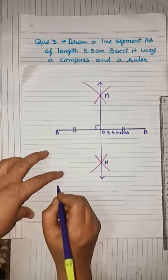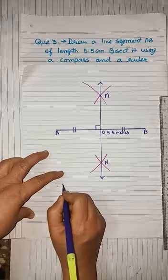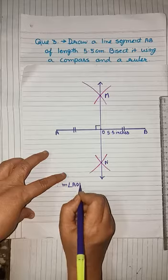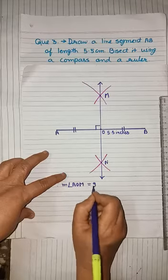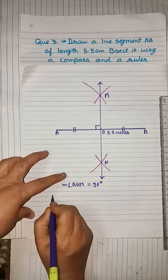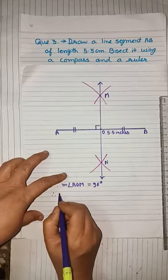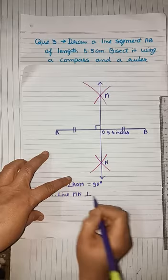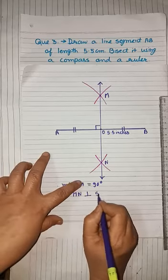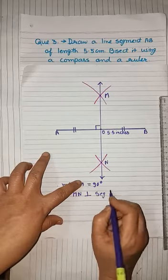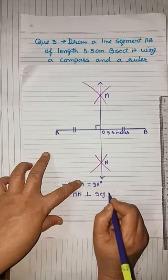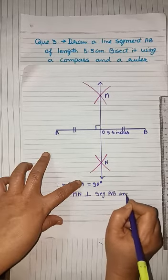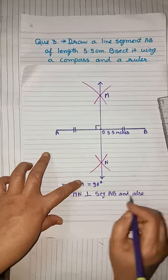After that you have to write down: since measure of angle AOM is equal to 90 degrees, therefore line MN is perpendicular to seg AB and also bisects it.